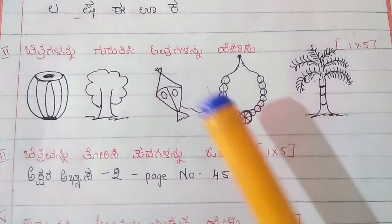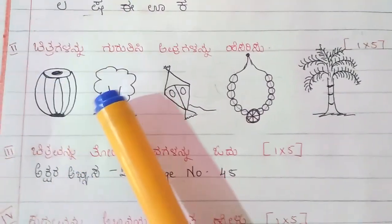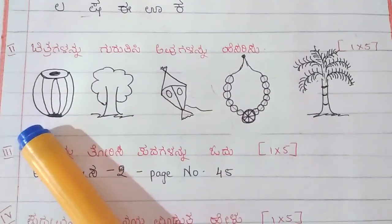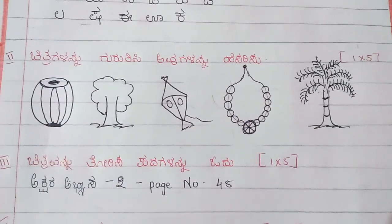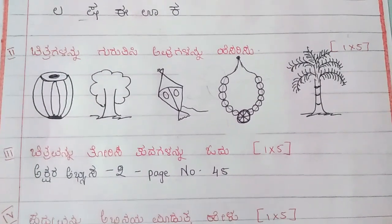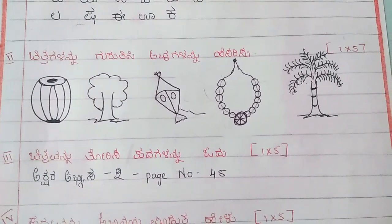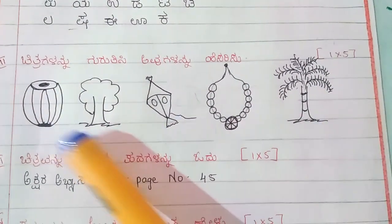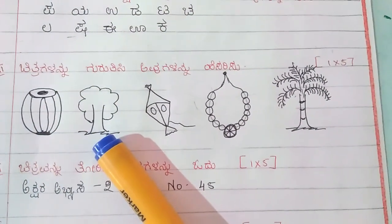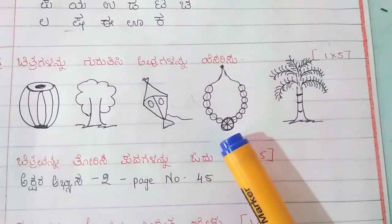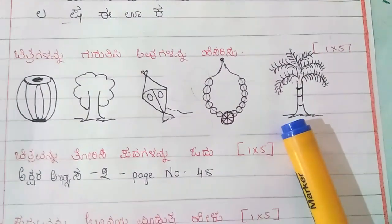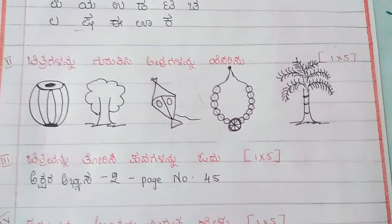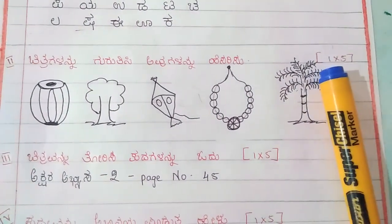Let's go to the second question. The child is asked to identify the pictures and name them. This question carries 5 marks. Children have to identify the pictures and name them, and this carries 5 marks.